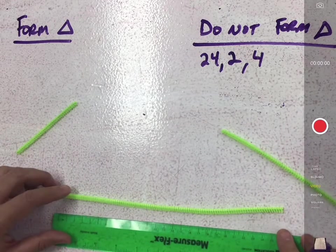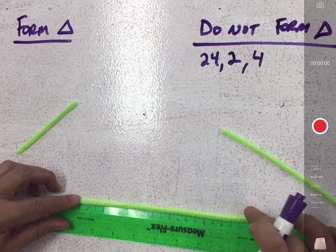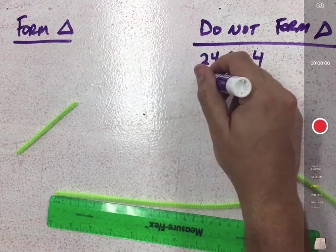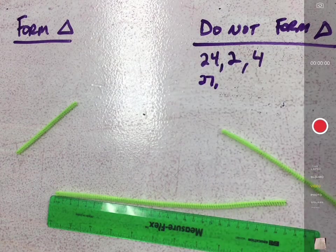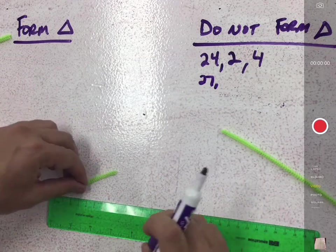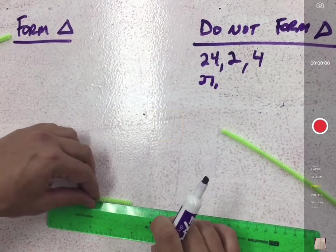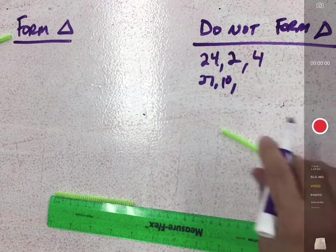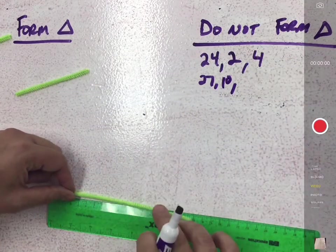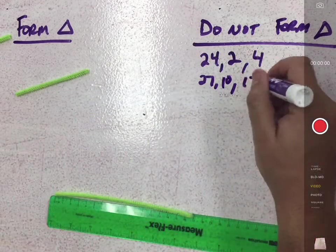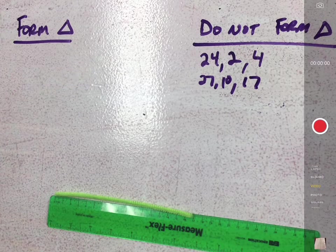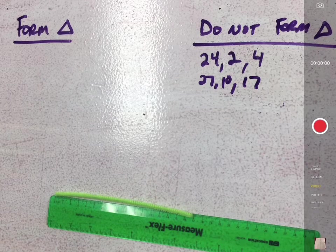Let's measure these sides. The first green one, the longest one, is 27. Then we've got this guy in centimeters is 10, and the third guy is 17. So that didn't work either.